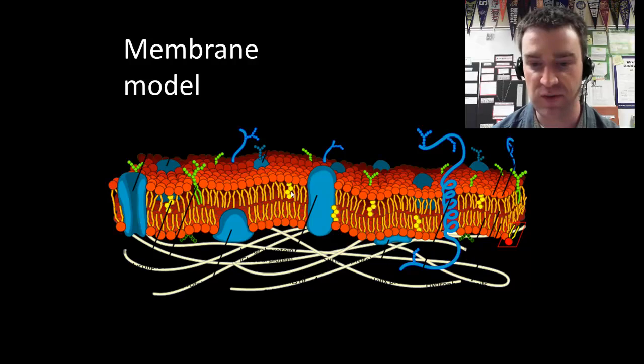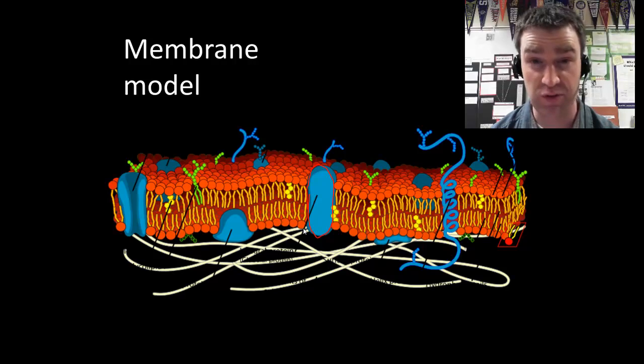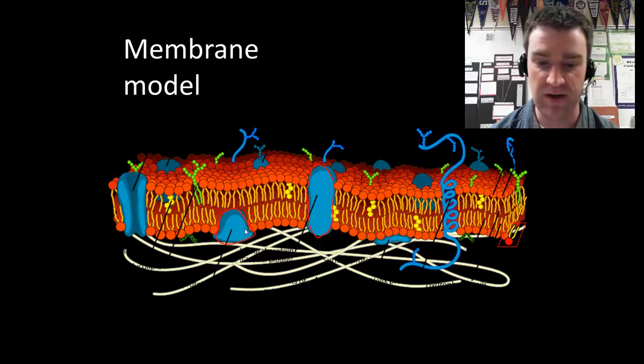There is cholesterol in membranes as well, though I'm not going to be talking much about that here. There are also proteins in membranes, lots of different types. Some proteins go all the way through the membrane like this one right here. Your book calls those integral proteins. Other proteins might just be on one side of the membrane or the other, called peripheral proteins.